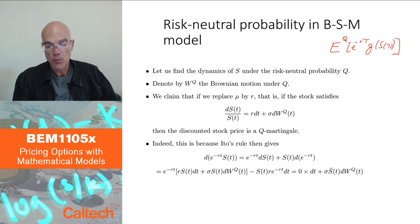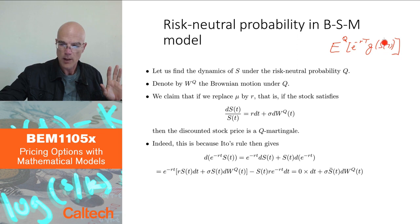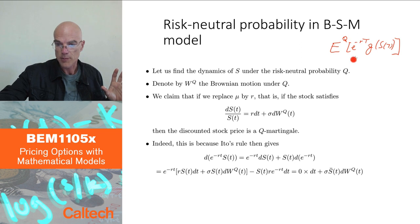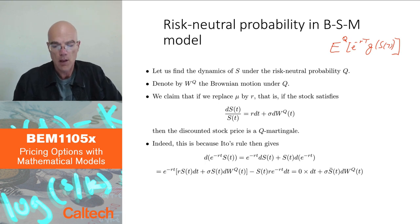If this works, it will be relatively easy to compute this expectation for at least some options, because we will know how S looks under Q — we replace mu by r — and then it's just a question of integration and computing expected values of a normal distribution, since we are dealing with a function of a normal distribution. We'll see how that goes for the call option.